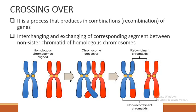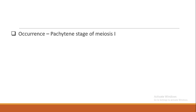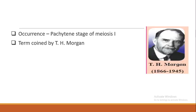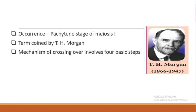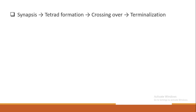Crossing over occurs in the pachytene stage of meiosis one. Pachytene is a sub-phase of Prophase one. So if asked when and where crossing over takes place, the most appropriate answer is: crossing over takes place in the pachytene stage of Prophase one of meiosis one during cell division. The term 'crossing over' was coined by T.H. Morgan, who studied the concept very vividly. The mechanism of crossing over has four basic steps.